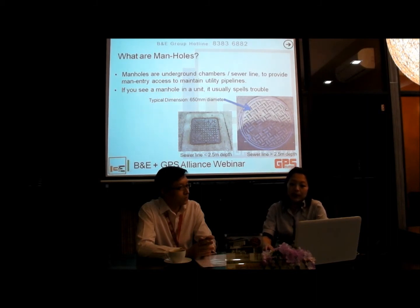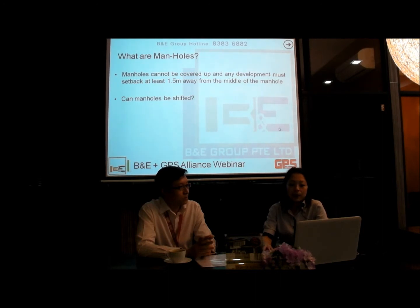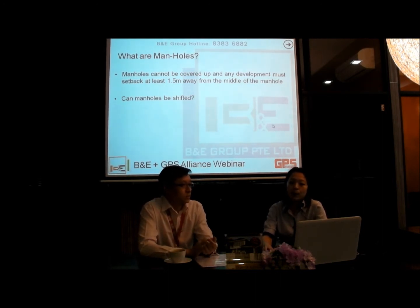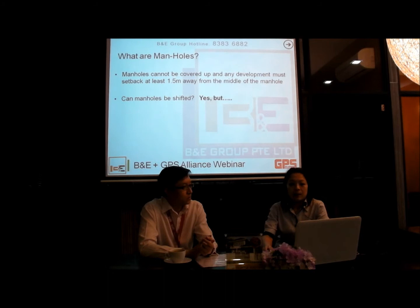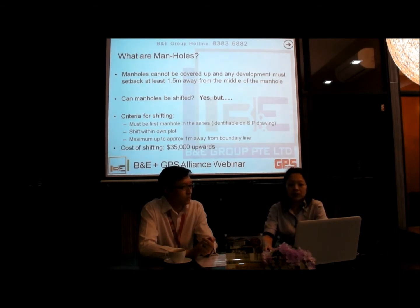A round manhole indicates that the sewer line is more than 2.5 meters deep. If you have a manhole in your unit and need to do an extension, you may need to construct a trench to protect the sewer line. Manholes cannot be covered up, and any development must be set at least 1.5 meters away from the centre of the manhole. A manhole can be shifted, but only the last manhole in the series — it must be shifted within your own compound, maximum 1 meter away from the boundary line. The cost of shifting is much more expensive than IC, at approximately $35,000 upwards.